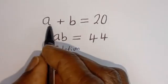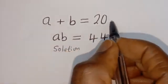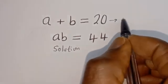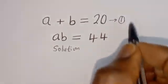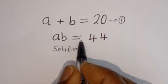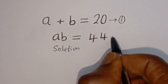From here, A plus B is equal to 20 — let's call this equation 1. And from here, A times B is equal to 44 — let's call this equation 2.